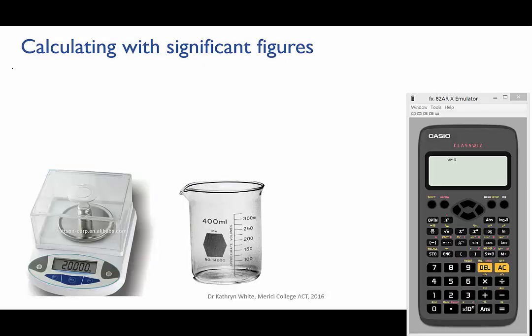So frequently you'll take a measurement in an experiment but you'll then need to do a calculation using that measurement. For instance, say you measure the mass and the volume of a sample of liquid so that you can calculate its density.